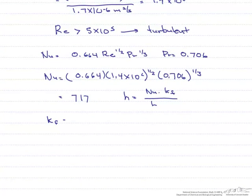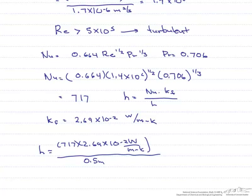So now let's put it all together, and when we calculate that, we find that we have a convective heat transfer coefficient of 38.6 watts per meter squared Kelvin.